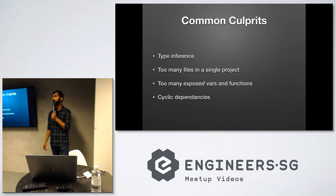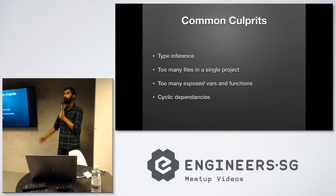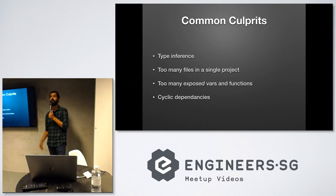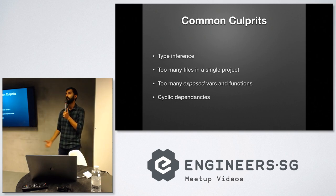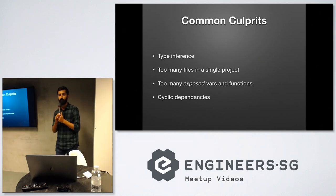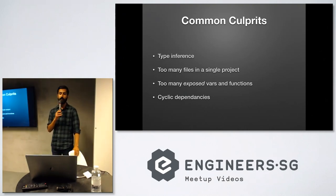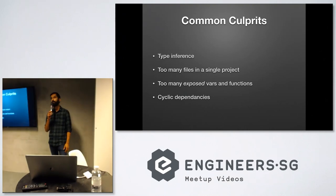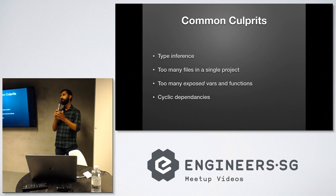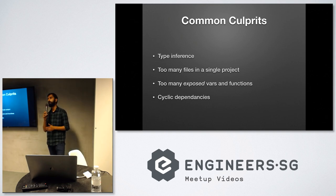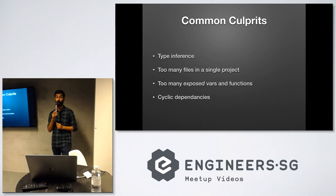The second culprit was having too many files in the project. This happened because we had more than a thousand Swift files in our Xcode project, and once you reach that level, Xcode just stops caching, which means incremental builds take almost as much time as clean builds. The third problem is when you have too many variables that are either internal or public in your project — if one class has internal variables that another class uses, and you change one of those classes, Xcode tends to recompile both, resulting in slower incremental builds.